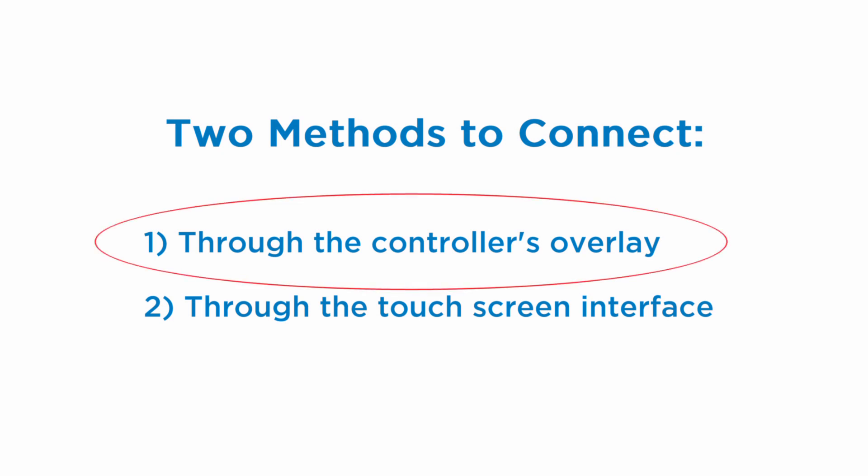Use the following procedure to configure an Intelis UltraConnect control system for the Percival Connect software via the controller overlay. To use the optional touchscreen interface method, please see the Percival Connect video configuring with the touchscreen interface.